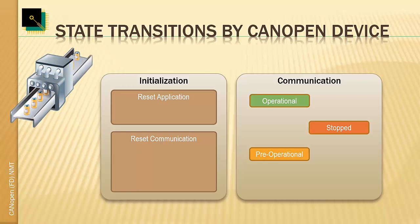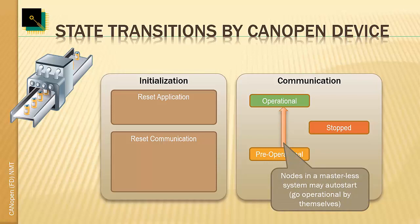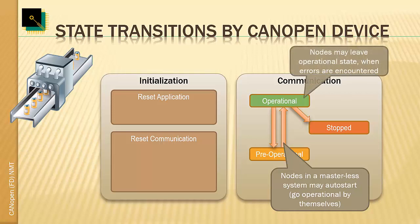When it comes to transitions that a CANopen device can make by itself, these are somewhat limited. However, there are a few cases. First is auto-start: if a device is intended to run in a network without an NMT master or in a fully automated setup, auto-start allows the device to go from pre-operational straight into operational mode on its own after power-up. A second case is leaving operational mode when errors are detected — devices can go from operational back to pre-operational, or depending on configuration into stopped mode. It is then up to the NMT master to detect this by consuming the heartbeats and react accordingly.